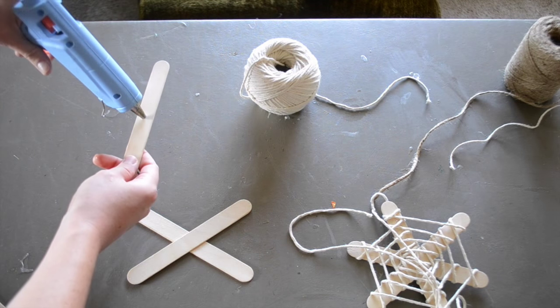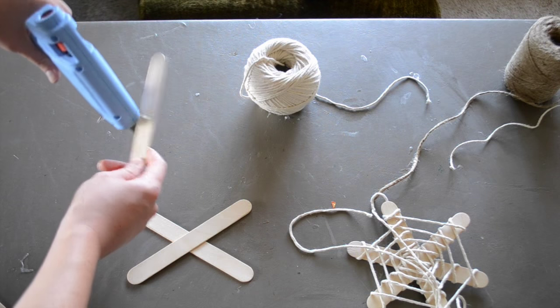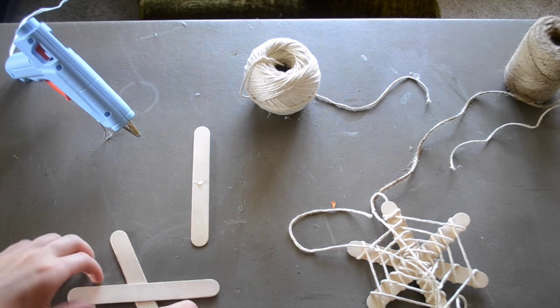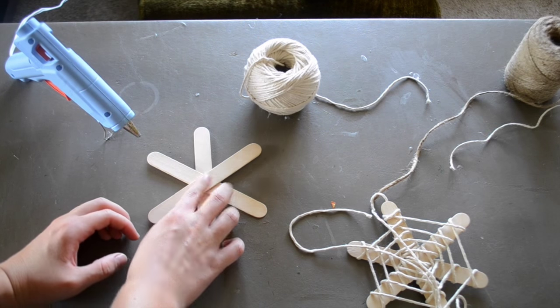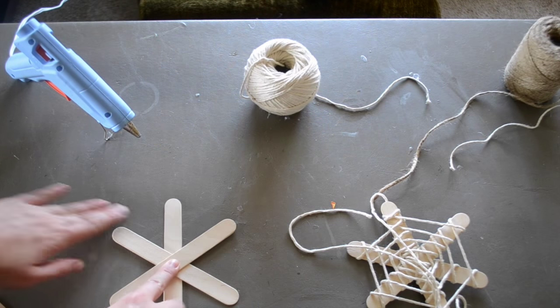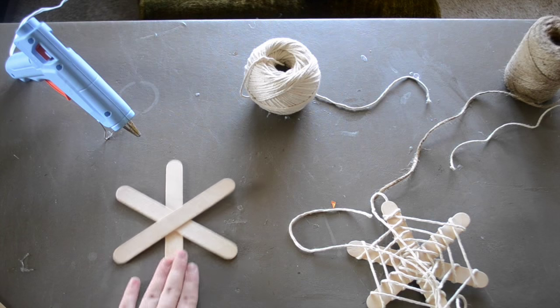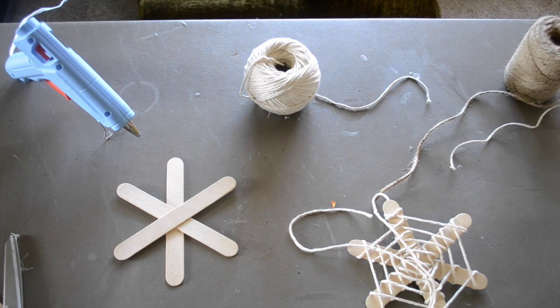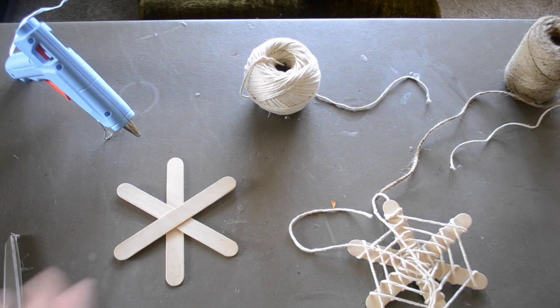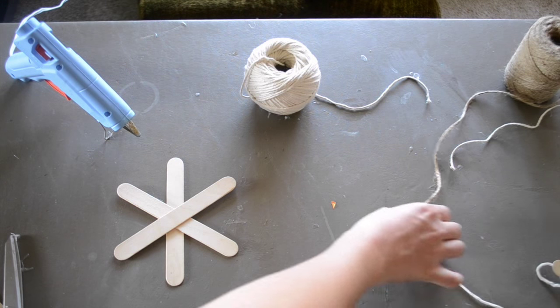Then I'm going to add another drop of hot glue to this other popsicle stick and lay the X right on the center. This is going to create the frame for our spider web. Now you want to let this dry before we get started because we're going to be pulling on it with string which can cause the glue to break apart if you pull too hard.